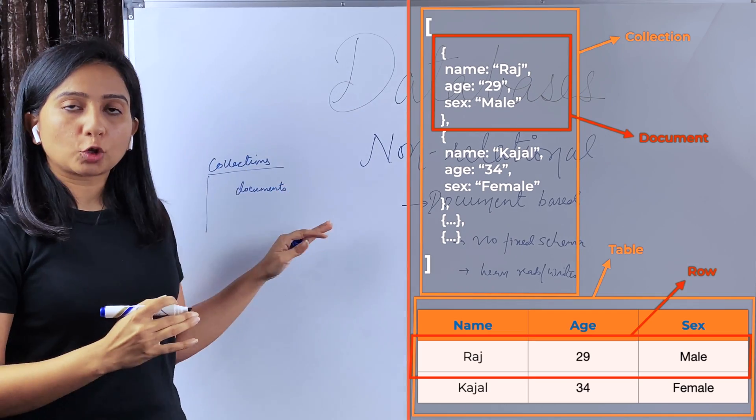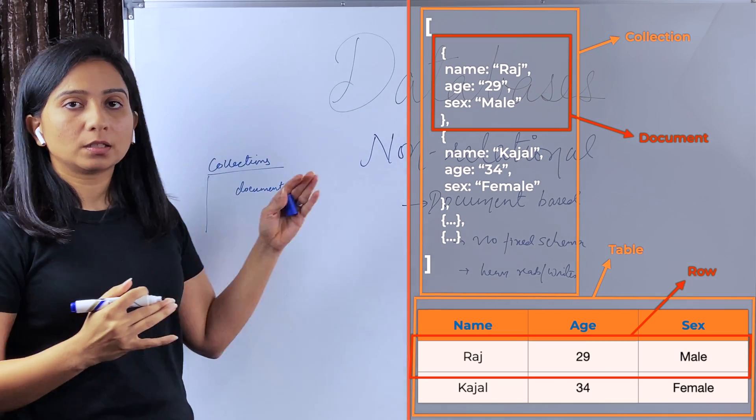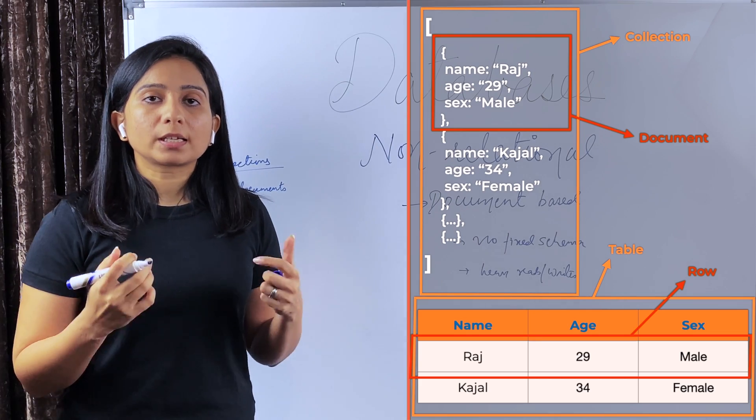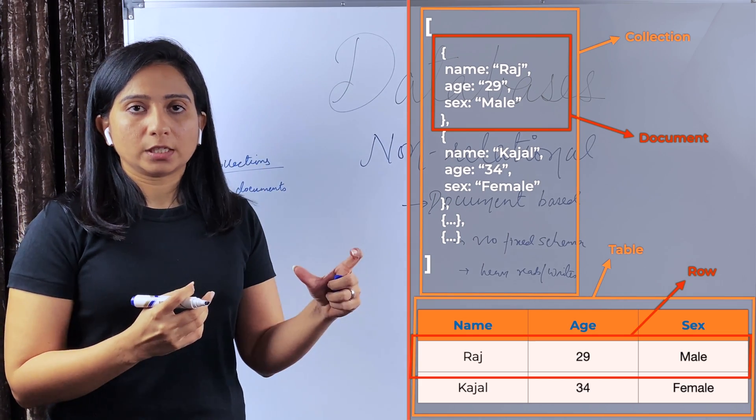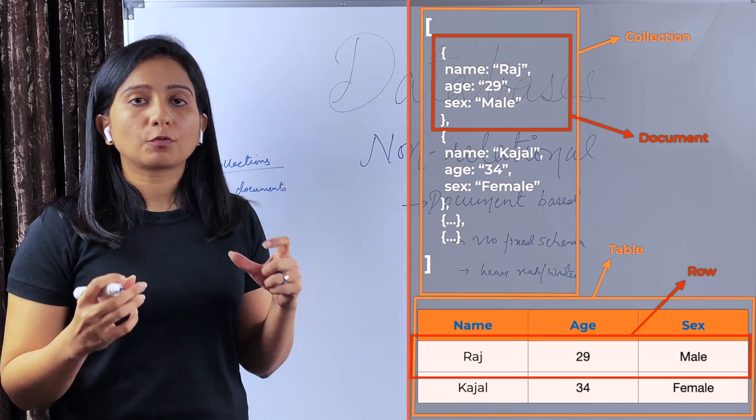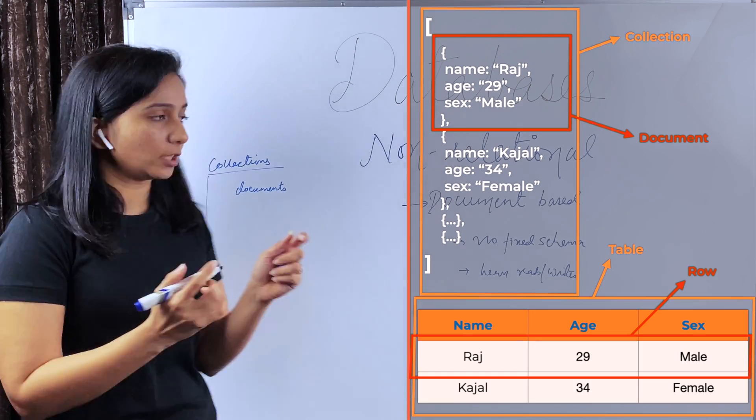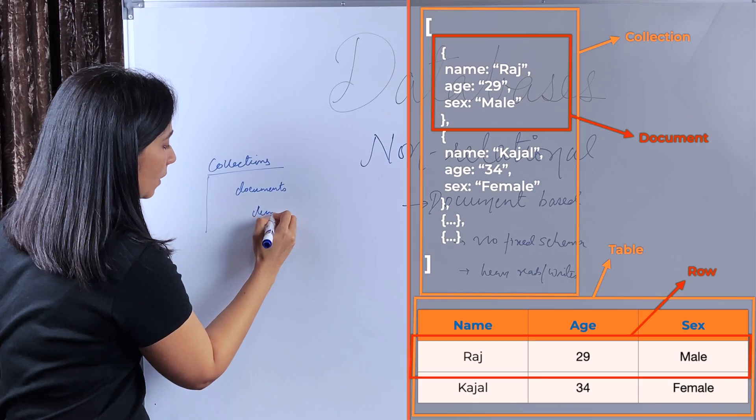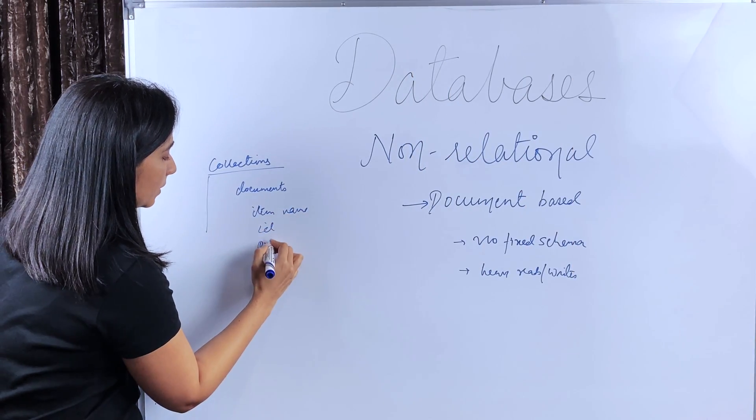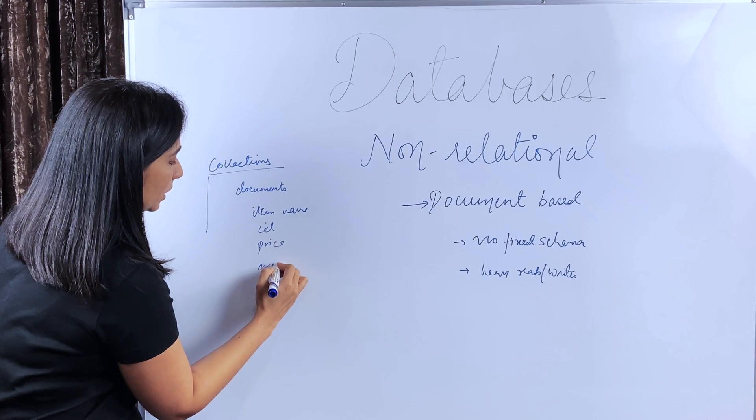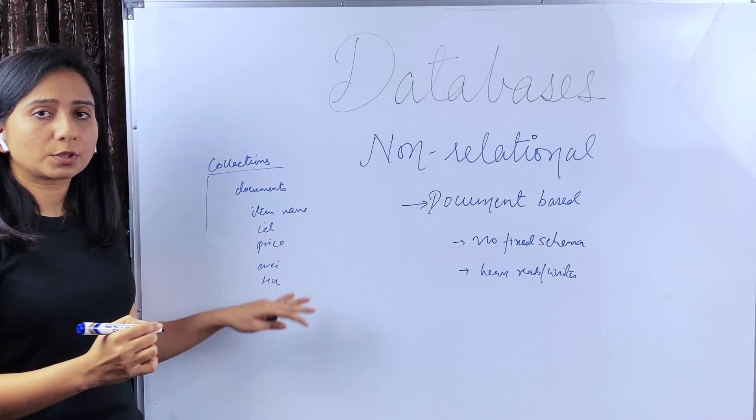So you can think of documents as rows and collections like tables. The use cases like when you have to, for example, store product details, like for an e-commerce website, if you have to store product details for an item, so you will have item name, item ID, price, availability, tax, etc. Some details like that. And you know that these details, although are known, but they can change over time.